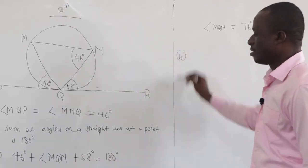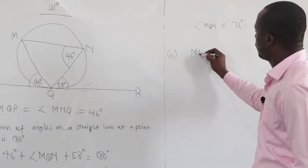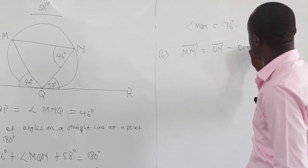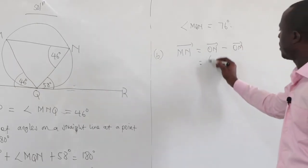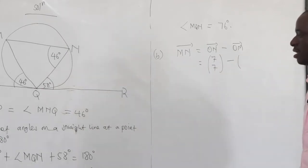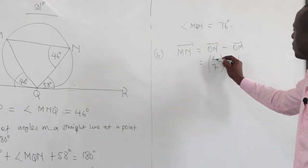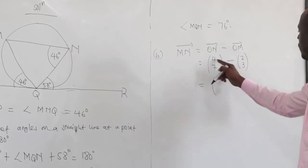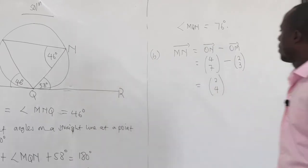Now let's see part B. Part B wants to find the magnitude of MN. Vector MN equals ON minus OM. Vector N is (4, 7) and vector M is (2, 3). So vector MN is (4 minus 2, 7 minus 3), which gives (2, 4).